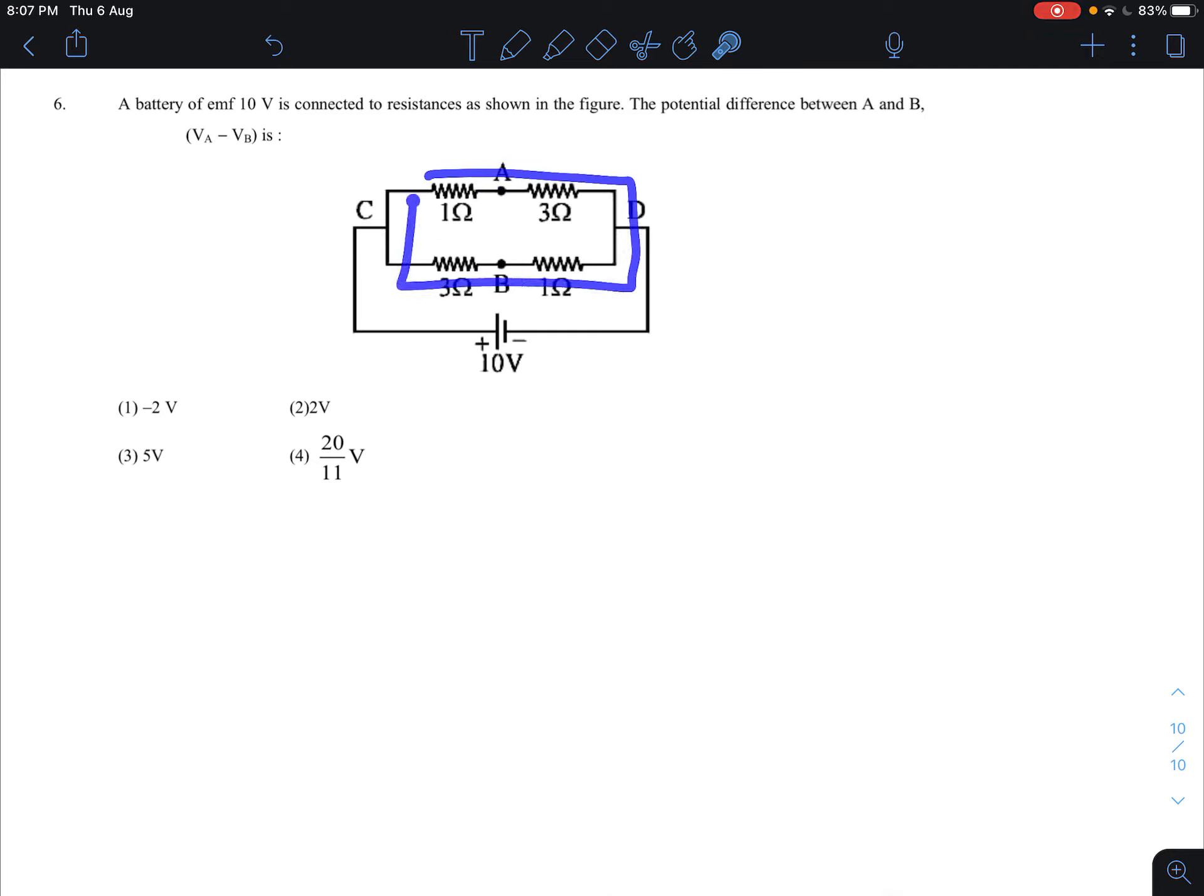First of all, we will find out the R-equivalent. Then we will get current from it and the rest will be easy. 3 and 1 are in series, so this will become 4 ohm.